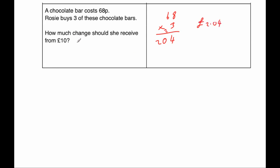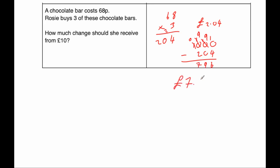And the question says how much change would she receive from 10 pound? So we've got 10 pound, which is 1,000 pennies, subtract 204. We can't do 0 take away 4, and there's nothing to borrow from, so we're going to borrow from this one — call it 0 and that's a 10, cross that off at 9, and that's a 10, cross that off 9, that's a 10. So 10 take away 4 is 6. 9 take away 0 is 9. And 9 take away 2 is 7. So how much change would she receive? 7 pound 96.